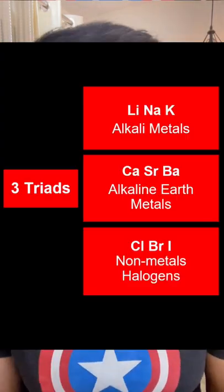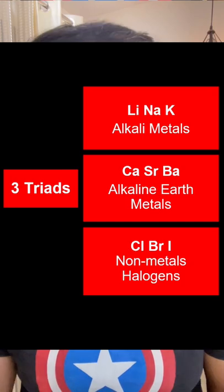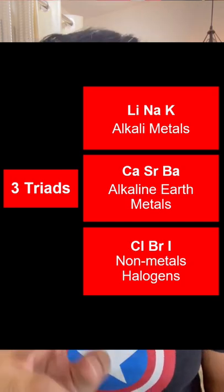The second triad they gave us we could call Alkaline Earth Metals — Calcium, Strontium, Barium — with Beryllium and Magnesium, but only 3 per triad. And the last triad was our only non-metal Halogen triad.